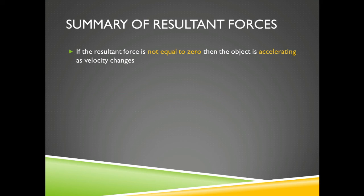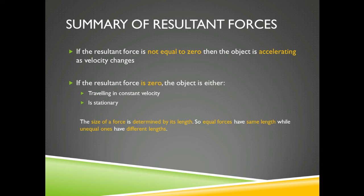So, if the resultant force is not equal to 0, then the object is accelerating because the velocity is changing. If the resultant force is 0, the object is either travelling in constant velocity or is stationary. So this is the summary I already told you earlier in the previous slide. And this is just summing up what you need to know.